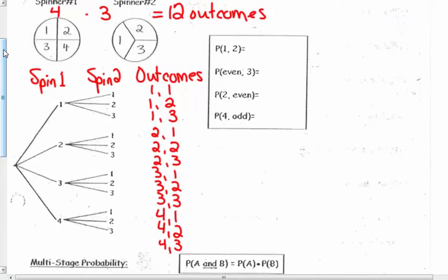We have a couple of questions. What's the probability of getting one and then two? It shows up one time — so it's one out of 12. The probability of getting an even number and then a three: that's two-three and four-three, a total probability of two out of 12. The probability of getting two and then an even number: two with a two — only one out of 12. The probability of getting four and then an odd number: four-one and four-three, which shows up two out of 12 times.